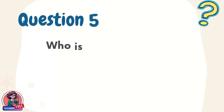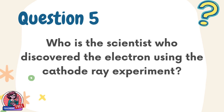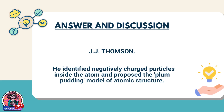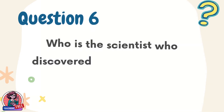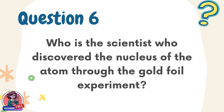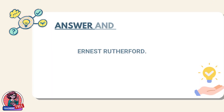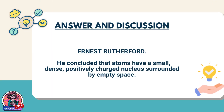Question 5. Who is the scientist who discovered the electron using the cathode ray experiment? Answer: J.J. Thomson. He identified negatively charged particles inside the atom and proposed the plum pudding model of atomic structure. Question 6. Who is the scientist who discovered the nucleus of the atom through the gold foil experiment? Answer: Ernest Rutherford. He concluded that atoms have a small, dense, positively charged nucleus surrounded by empty space.